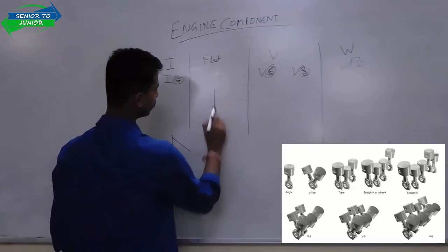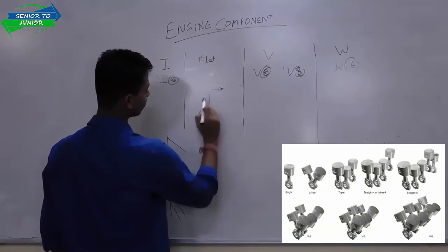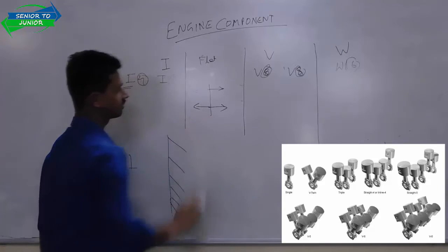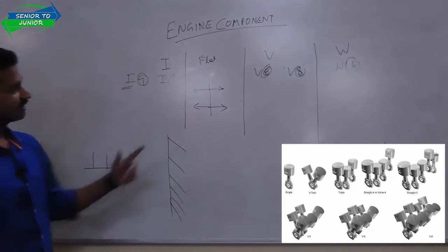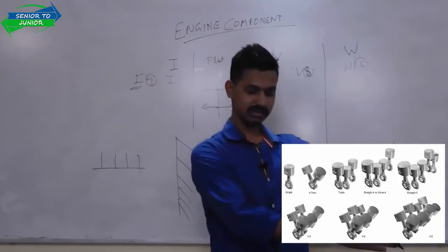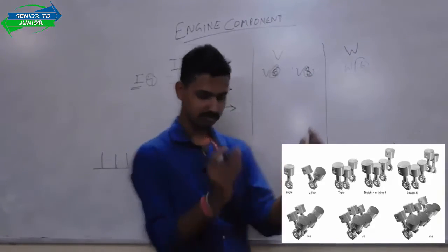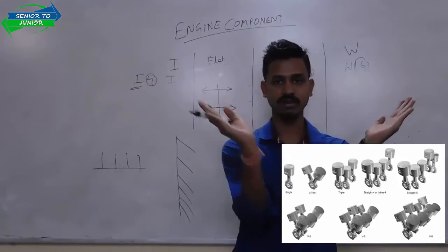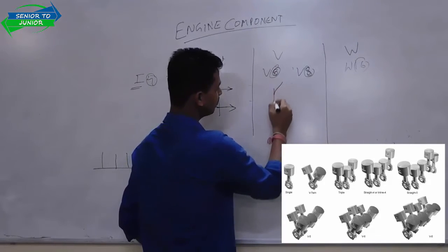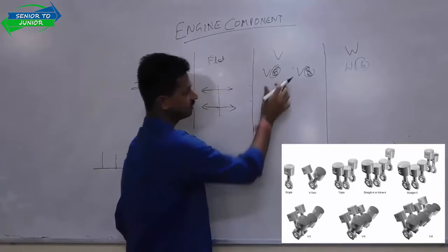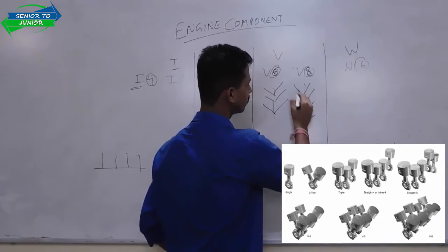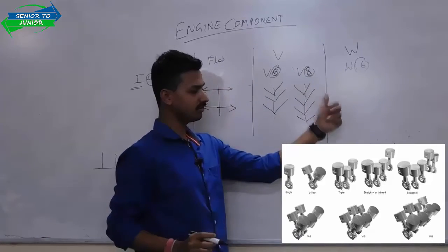In a flat layout there is even distribution — one piston on each side. In a V layout, the crankshaft is in the centre and the pistons are arranged in a V shape. For example, V6 means three cylinders on one side and three on the other, making six in a V shape. V8 means four cylinders on each side, totalling eight cylinders.